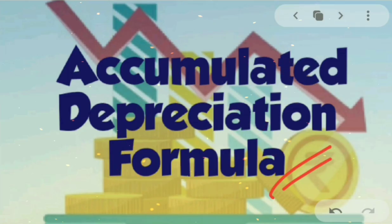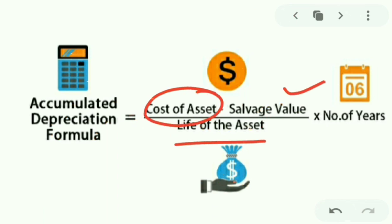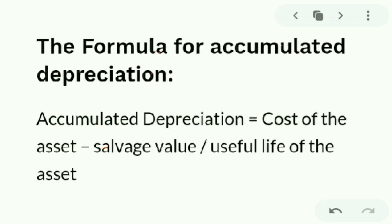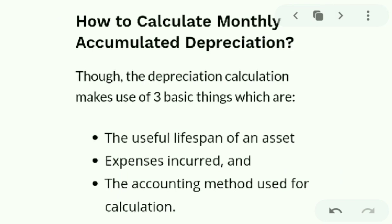The formula for accumulated depreciation is: Accumulated Depreciation = (Cost of the Asset − Salvage Value) ÷ Life of the Asset × Number of Years. We calculate accumulated depreciation using three basic things: the useful lifespan of the asset, the expenses incurred on the asset, and the accounting methods used.